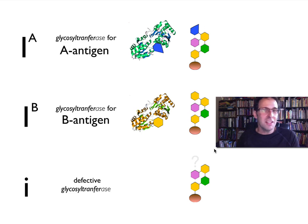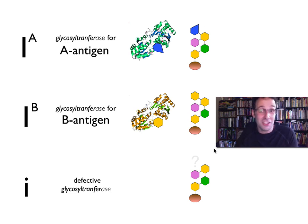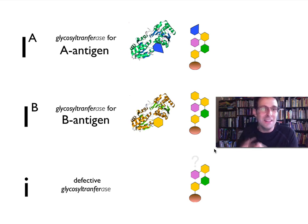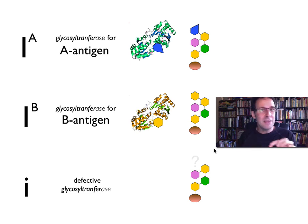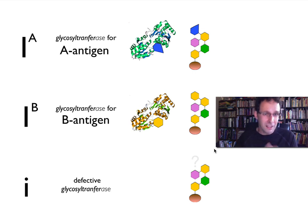And that's the gene that encodes the enzyme that adds things onto the H-antigen to turn them into a B-antigen or an A-antigen. The name of this enzyme is glycosyltransferase. And there are three alleles of the gene that encodes glycosyltransferase.